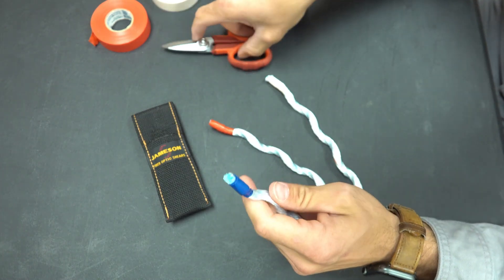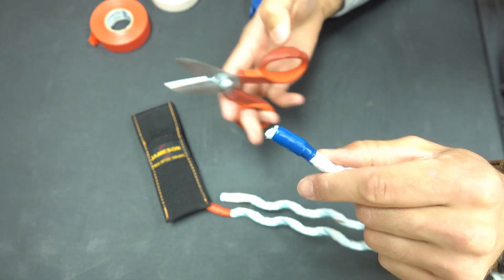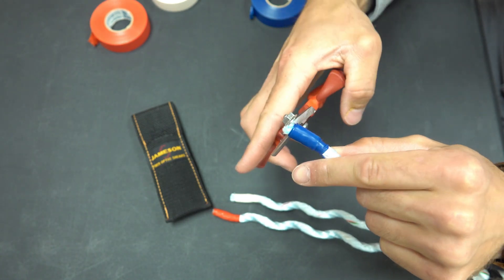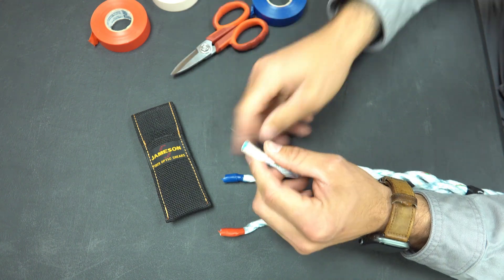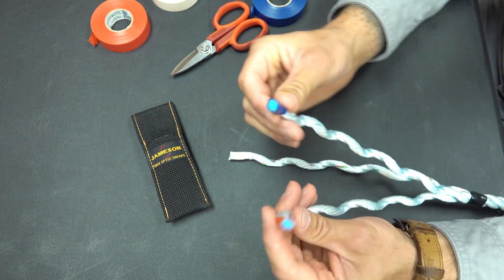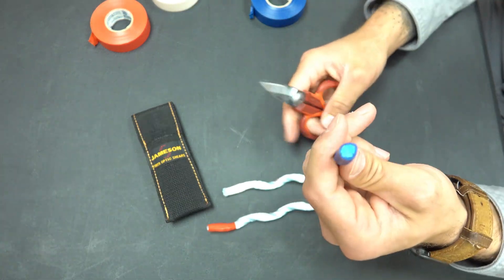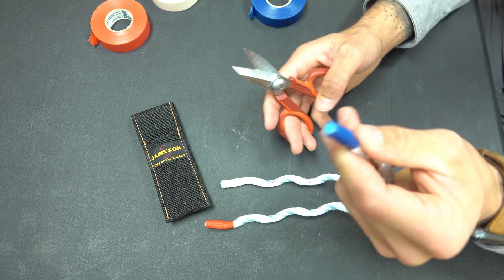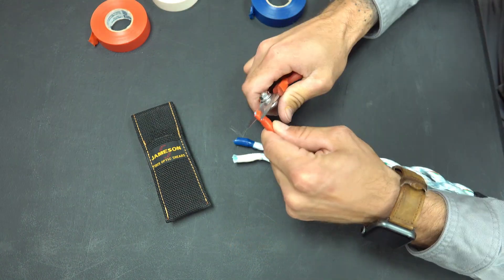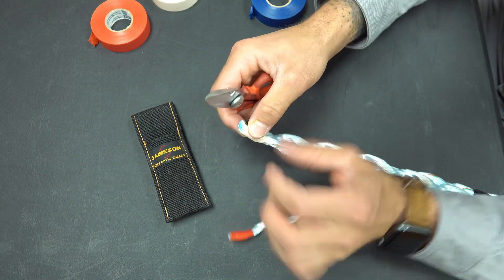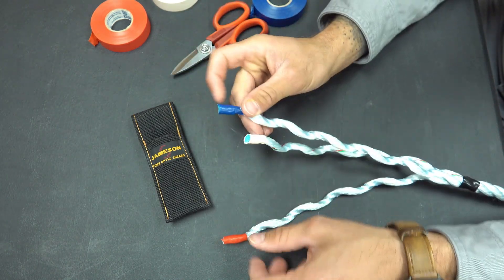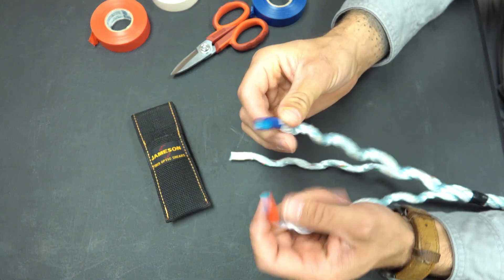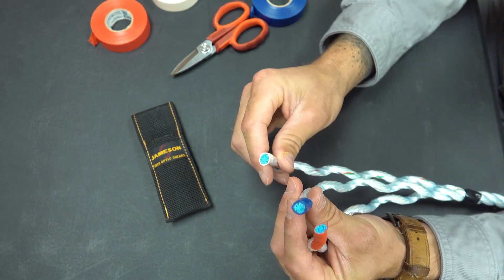The next step is I'm going to cut off the excess rope and give it a nice clean edge with my scissors. Now I have clean edges on each one of my individual strands.